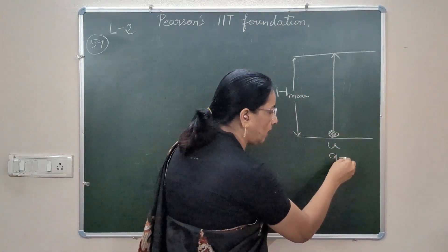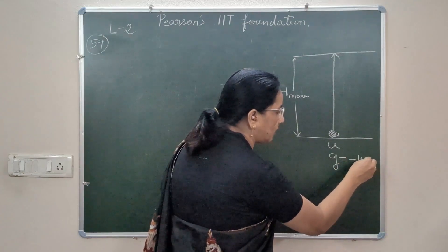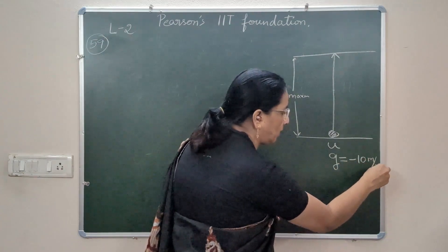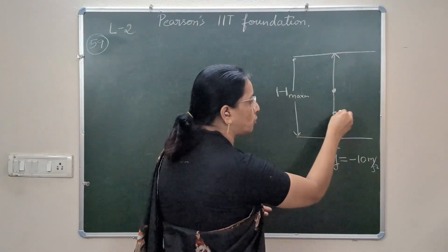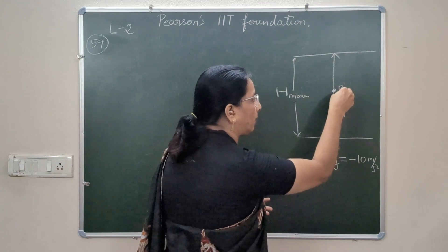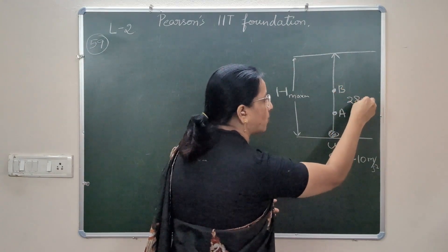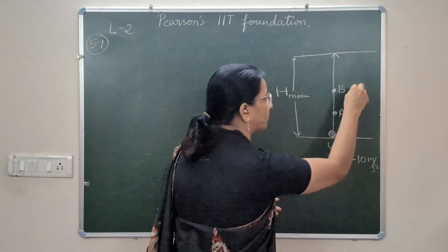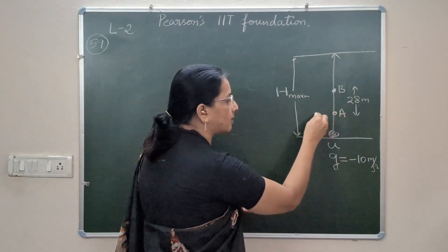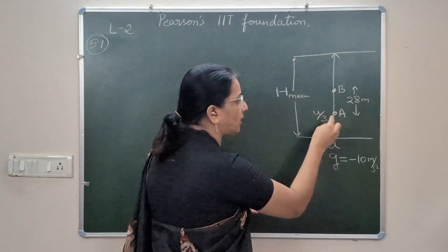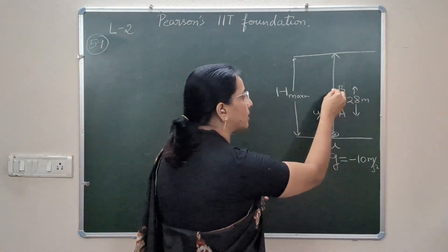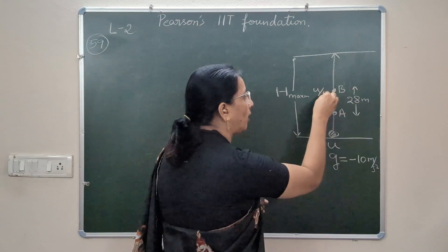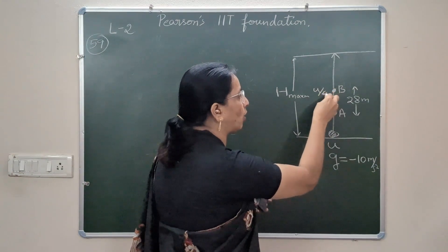Since the object is in upward motion, it is decelerated by 10 meter per second square, so we should take it as negative. This object passes through two points, point A and B, which are separated by 28 meters, and the object crosses point A with a speed of one-third the velocity and crosses point B with one-fourth the initial velocity.